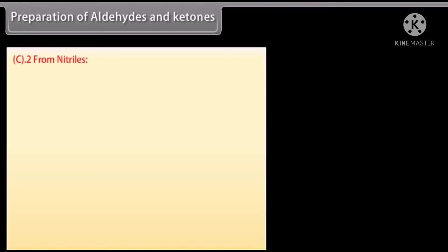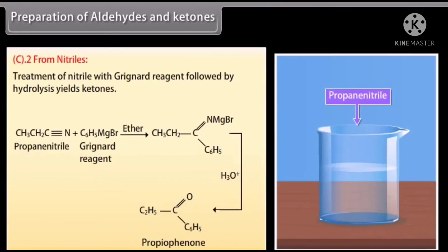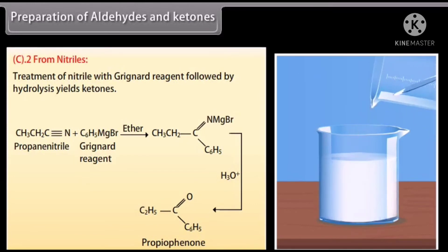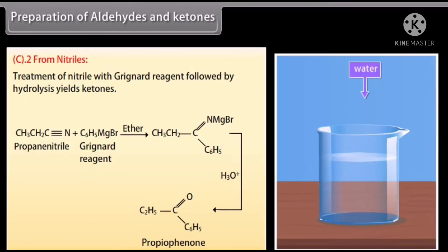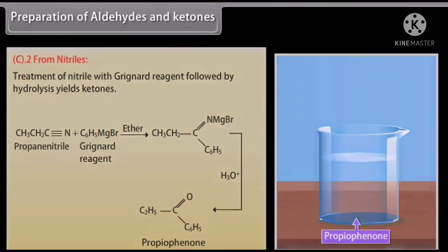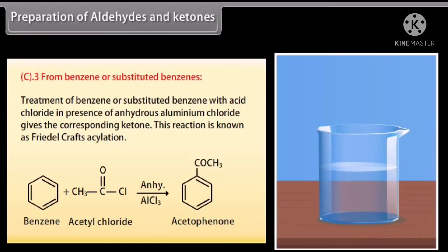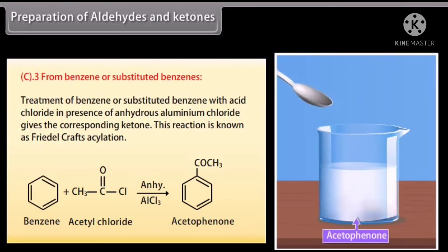From nitriles: treatment of a nitrile with a Grignard reagent followed by hydrolysis yields ketones. A Grignard reagent in ether reacts with propanenitrile to form an intermediate, which upon hydrolysis gives propiophenone. From benzene or substituted benzenes: treatment of benzene or a substituted benzene with an acid chloride in the presence of anhydrous aluminium chloride gives the corresponding ketone. This reaction is known as Friedel-Crafts acylation.